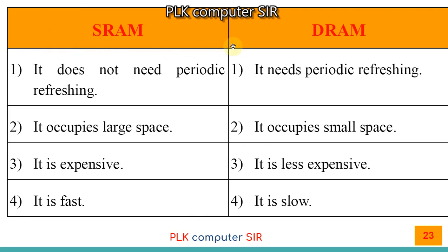Difference between SRAM and DRAM: SRAM does not need periodic refreshing; DRAM needs periodic refreshing. SRAM occupies large space; DRAM occupies small space. SRAM is expensive; DRAM is less expensive. SRAM is fast in processing; DRAM is slow in processing speed.